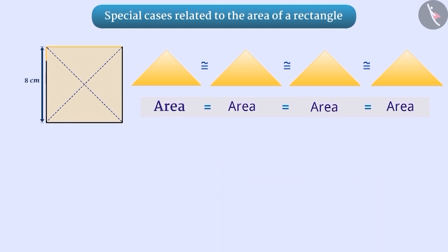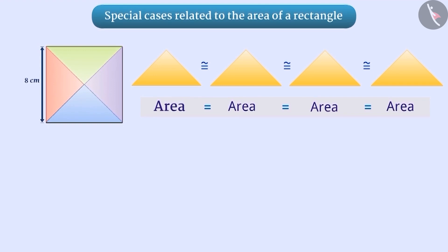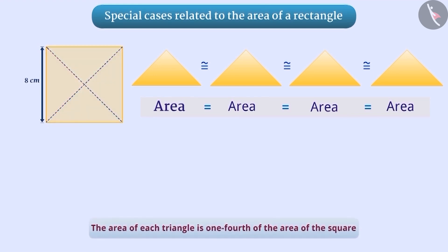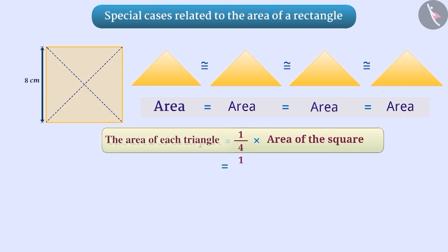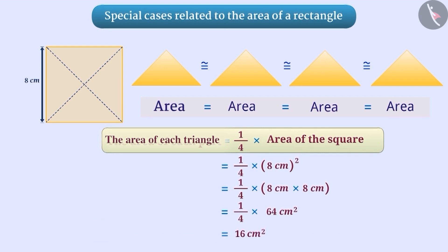Since all four triangles are congruent to each other, they are equal in area. Since one square is being divided into four equal parts, the area of each triangle is one-fourth of the area of the square. That is, 1/4 into 8 cm squared, which is equal to 16 square centimeters.